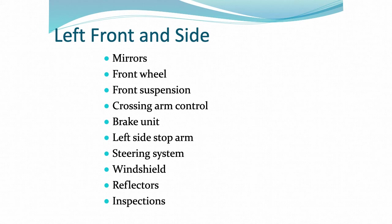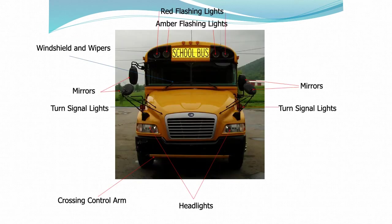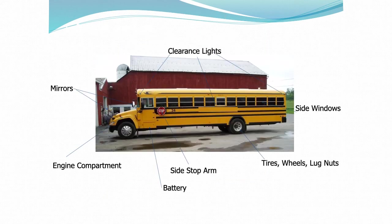As you can see, there are numerous items on just the left side of the bus to check for safety reasons. Here are some things to check at the front of the bus, including several mirrors and lights. Don't forget the wipers. Here are some things to check on the left side of the bus. Be sure to check the drive shaft, drive shaft hangers, and exhaust pipe underneath the bus as well.